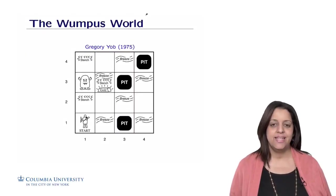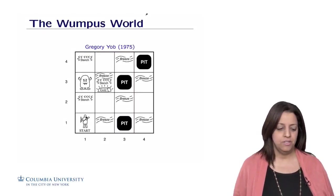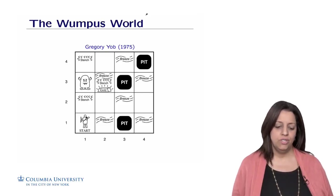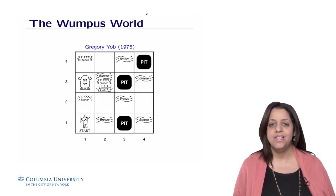We'll illustrate the rest of this lecture with this example drawn from the AI literature. It's called the Wumpus World, invented by Gregory Yob in 1975.